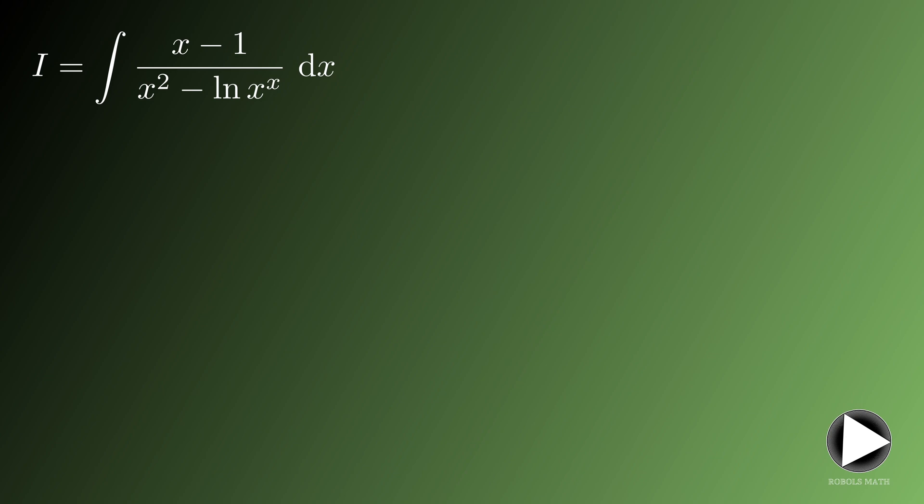We first rewrite the denominator by bringing the power of x down. So the denominator becomes x squared minus x times ln of x.